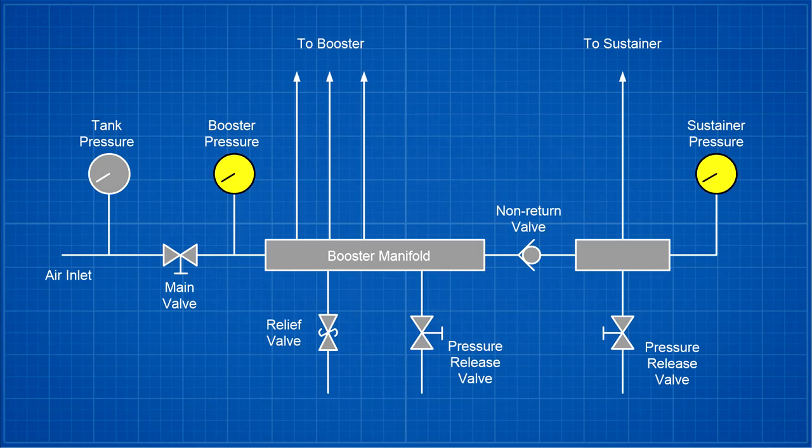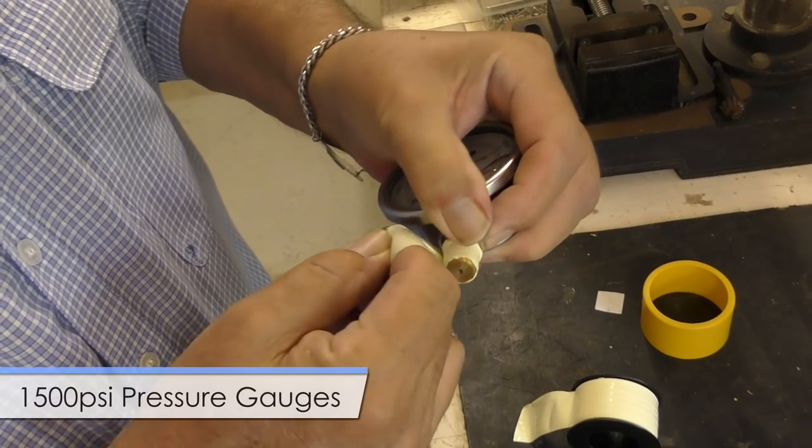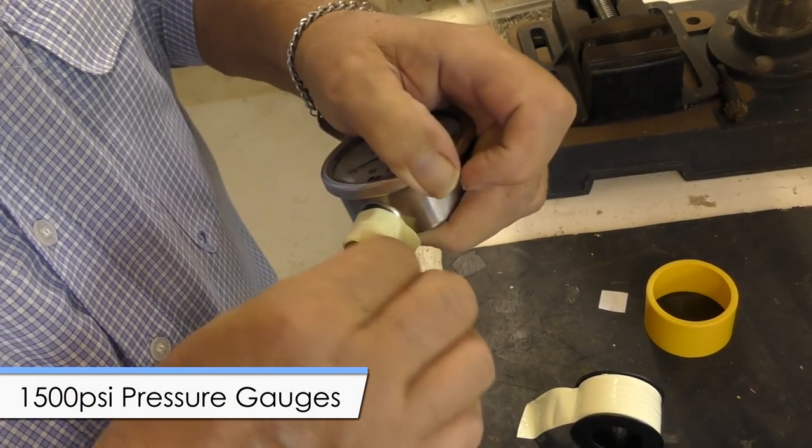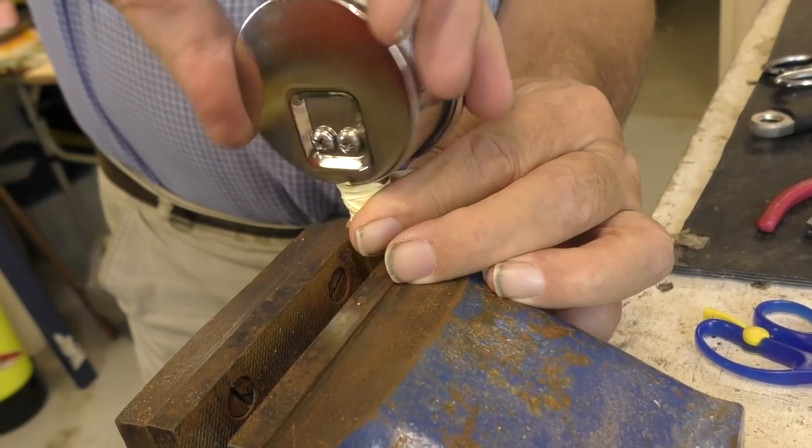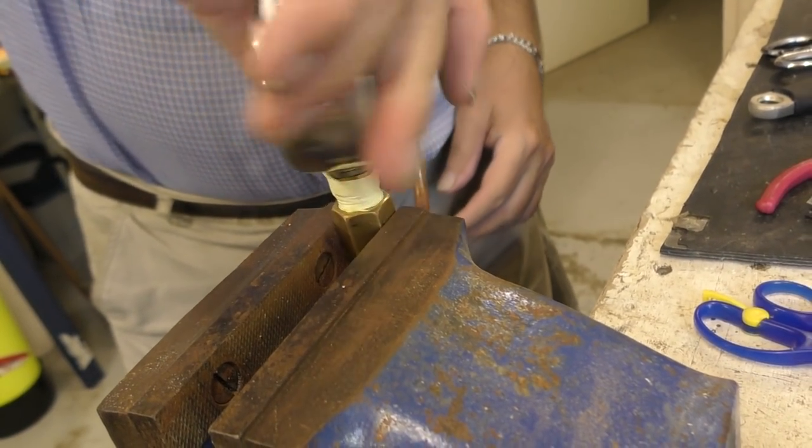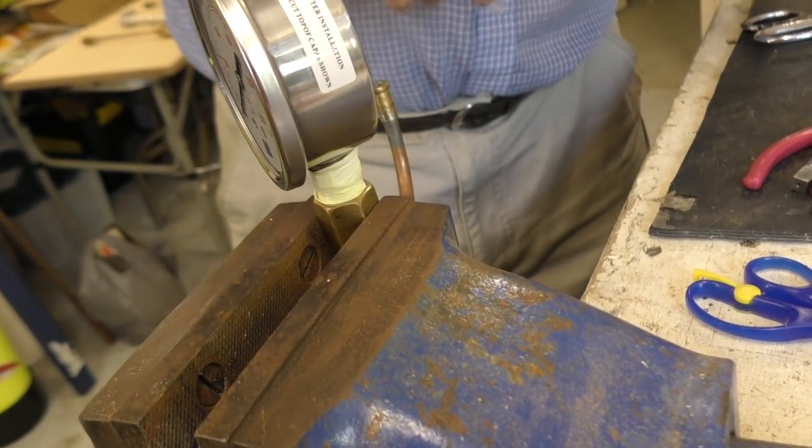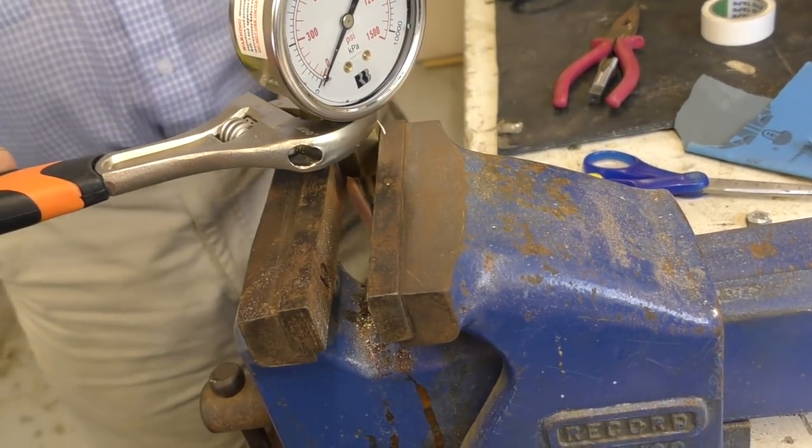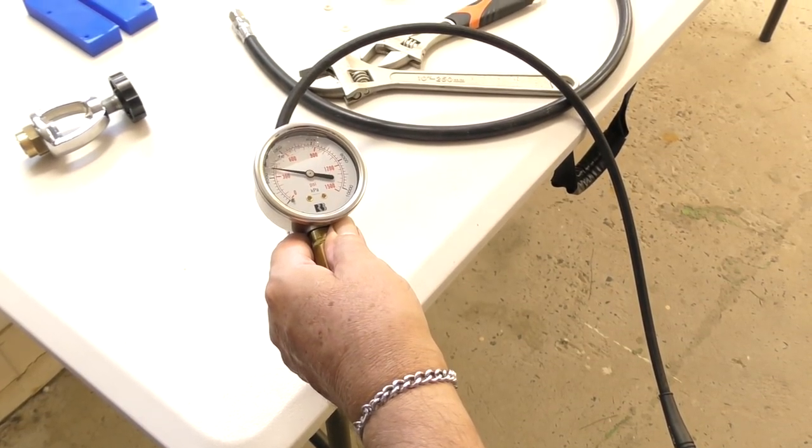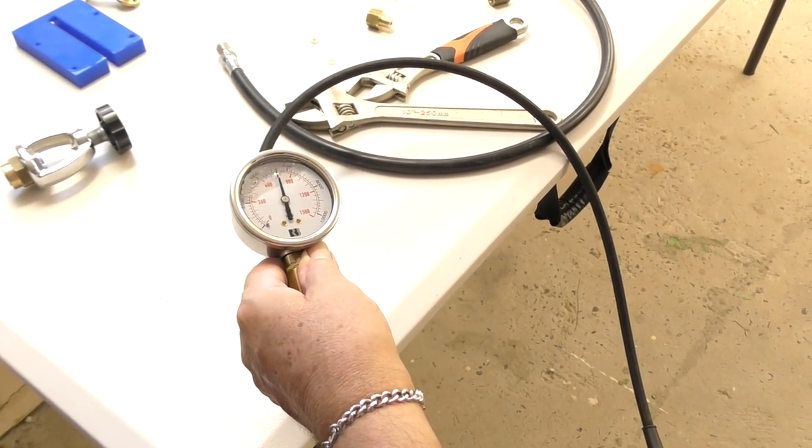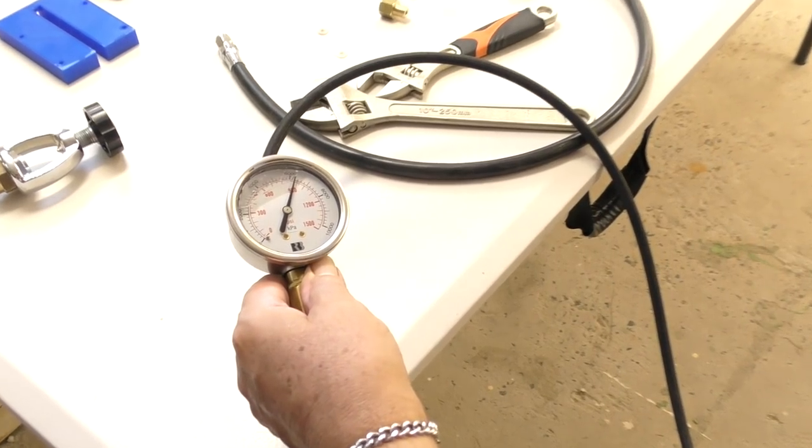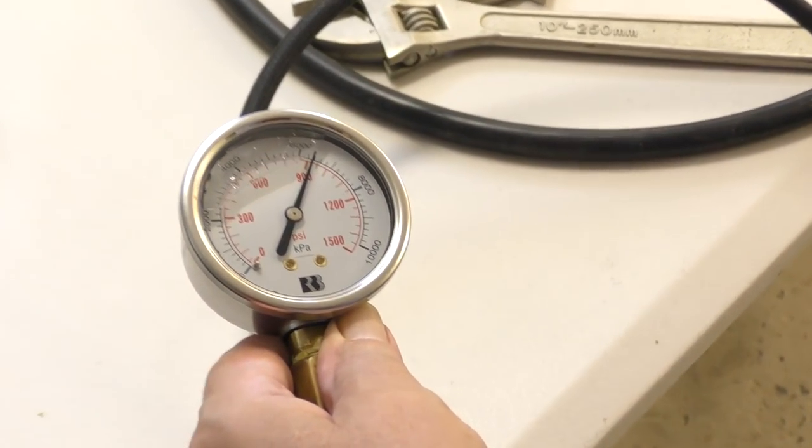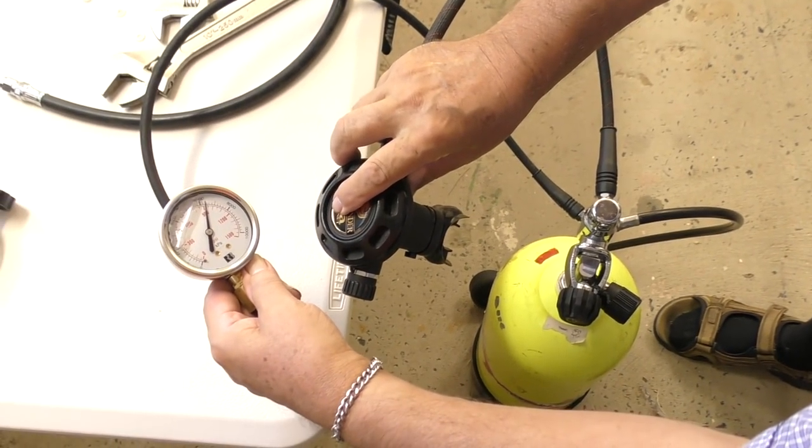The booster and sustainer pressure gauges have a range of up to 1500 psi. Here we're fitting it to one of the connectors that will hook up to the rest of the system. Then we apply some pressure from the scuba tank to check it for leaks and also to see how accurately it reads. And then we let the pressure out again.